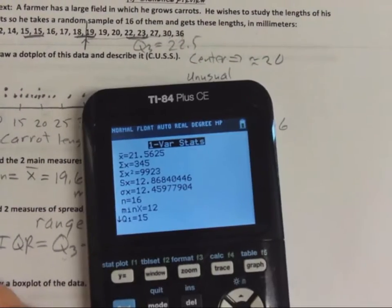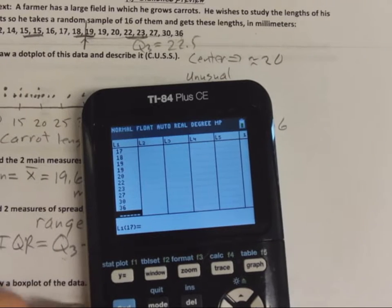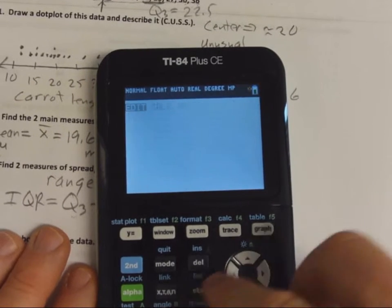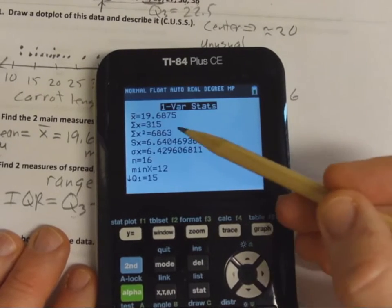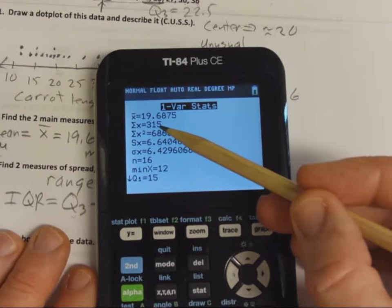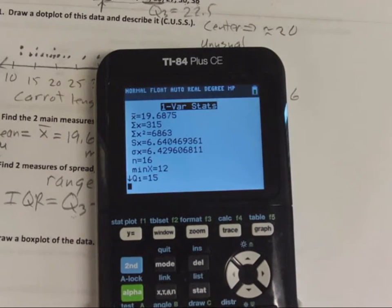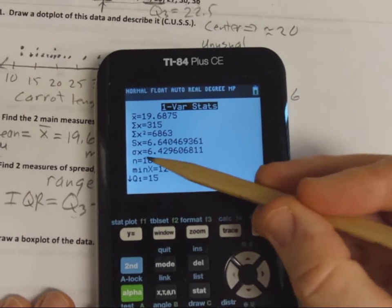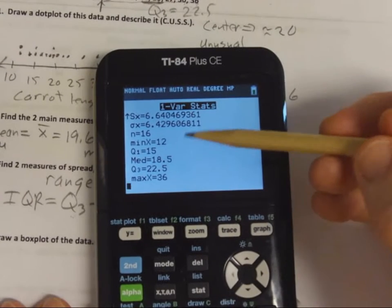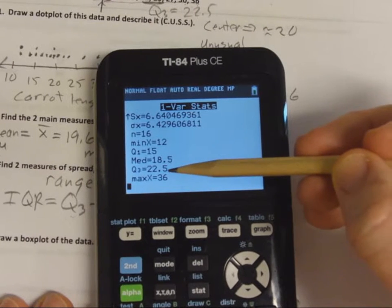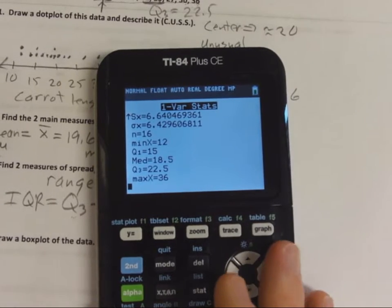I had the wrong data — let me correct that to a 36. Now: stat, calculate, one-variable stats. The X-bar is the mean. The S is the standard deviation — the average amount the points vary from the middle. If you scroll down, it gives the five-number summary: the minimum value, Q1 (lower quartile), the median, Q3 (upper quartile), and the max. Those are handy and are the numbers we use to draw a box plot.